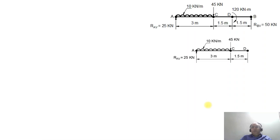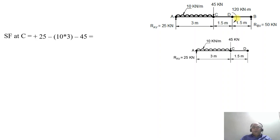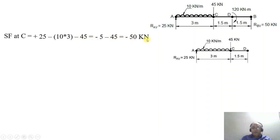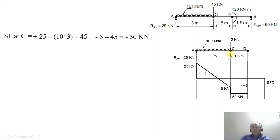Next, we consider the point load at C and the section up to 1.5 meters to D, without including the couple. SF at C was minus 5, so minus 5 minus 45 equals minus 50 kilonewton. In other words, SF at C equals plus 25 minus 10 into 3 minus 45, which equals minus 50 kilonewton. Due to the point load at C, the shear force drops further to minus 50 kilonewton.